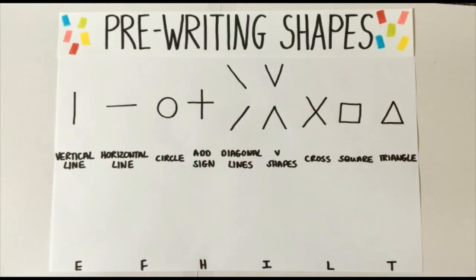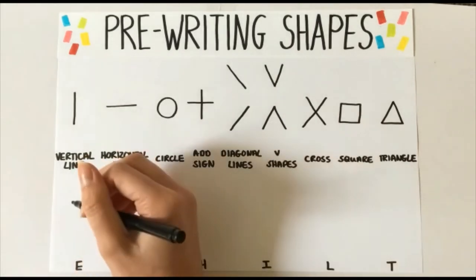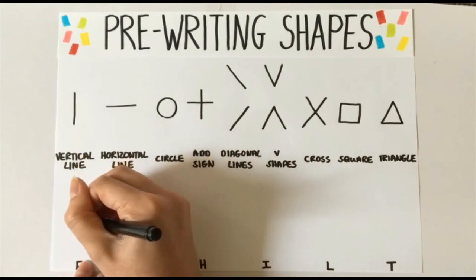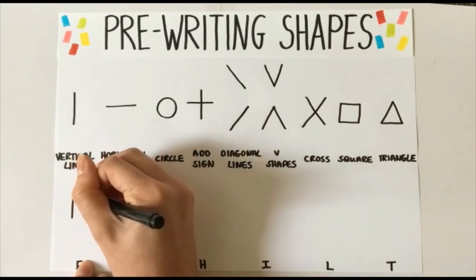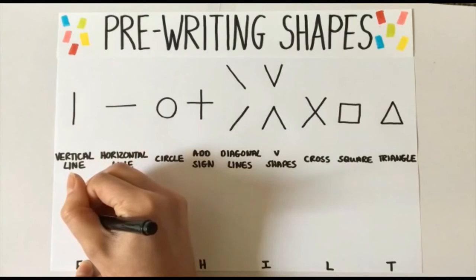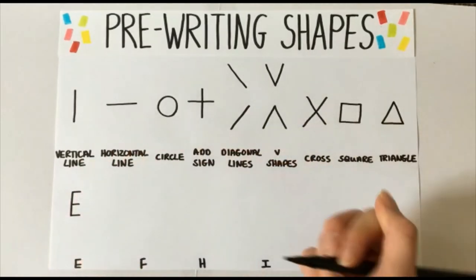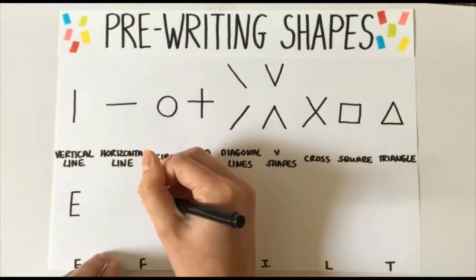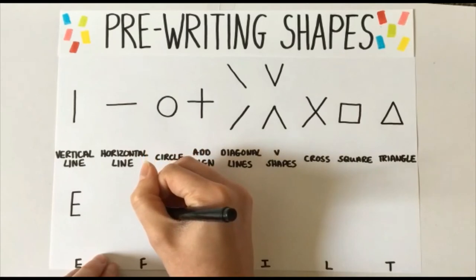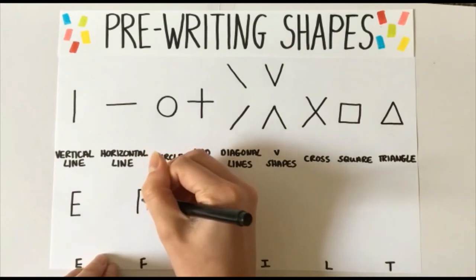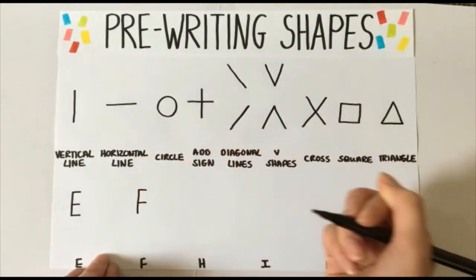All of these letters include our vertical and horizontal line. E. Start at the top, go down, across, across and across. F. Start at the top, down, across, across.